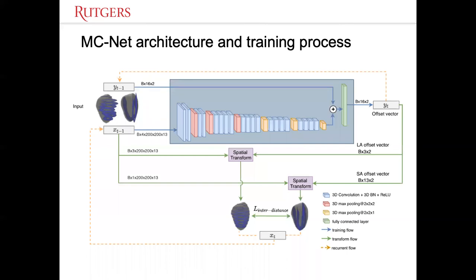Here is the MC-Net architecture and training process. The input of the network has three parts. One is the short axis volume with the long axis volume. The short axis volume is calculated with the Euclidean distance map. And the third component is the offset vector. For the first iteration, it will be blank. We use the VGG network as our backbone.